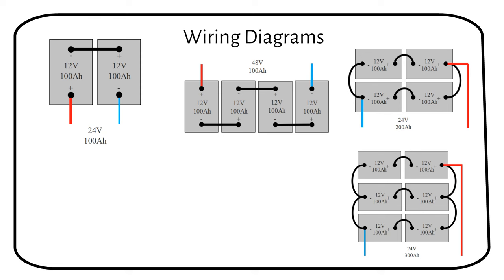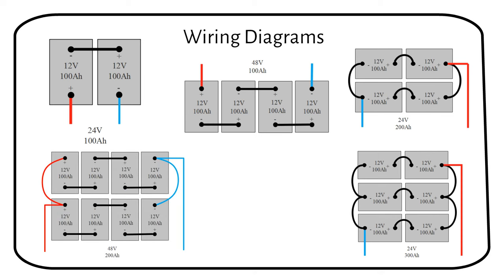If you want to make a 48 volt battery out of eight 12 volt batteries, then this is the wiring diagram you need. This is called 4S2P and creates 48 volts at 200 amp hours.